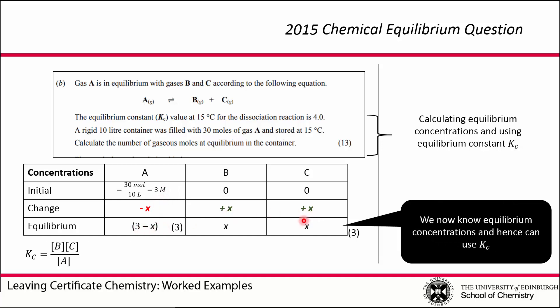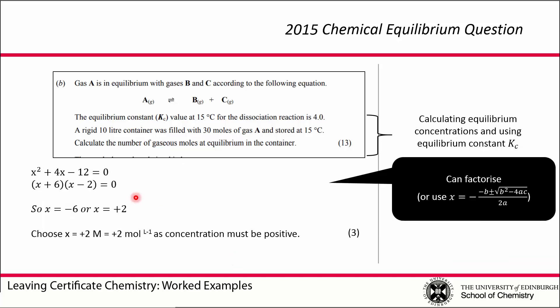Now we have some way of expressing the equilibrium concentrations. We can use our equilibrium constant expression. We can substitute in these values for concentration of B, concentration of C, concentration of A, using X times X divided by 3 minus X, and we're told in the question that this equals 4. That means we can rearrange this expression to give us a quadratic expression: X squared plus 4X minus 12 equals 0.